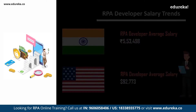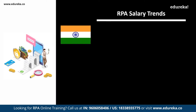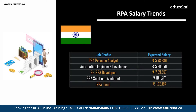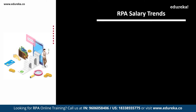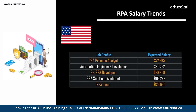In India, an RPA process analyst can expect around ₹5,48,000 per annum; an automation engineer or automation developer can expect ₹5,90,000; a senior RPA developer can expect around ₹7,69,000; an RPA solutions architect can expect around ₹10,11,000; and an RPA lead can expect around ₹11,26,000. In the USA, an RPA process analyst earns around $72,000; an automation engineer around $90,000; a senior RPA developer around $98,000; an RPA solutions architect around $100,000; and an RPA lead around $1,23,000.